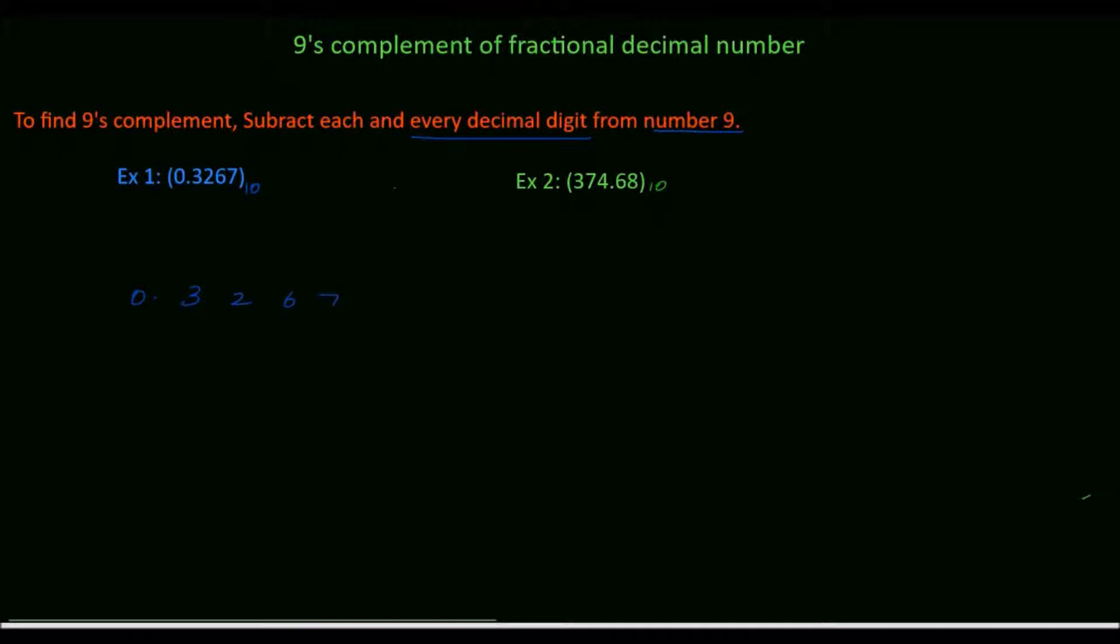Subtract each and every digit from number 9. Before the fractional point, we don't have any valid digits, so we don't need to subtract 0 from 9. Leave this.